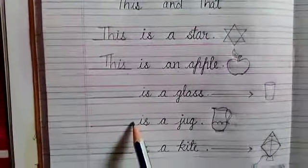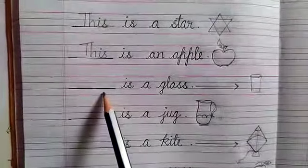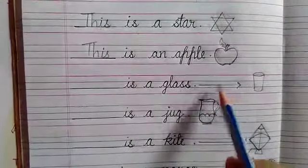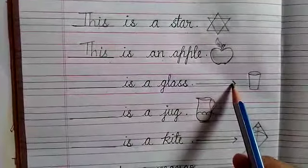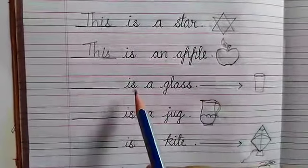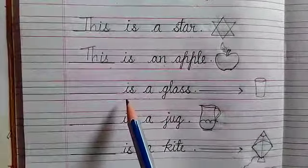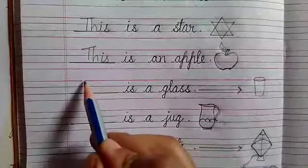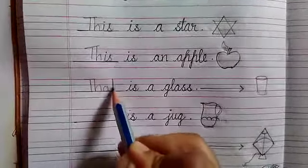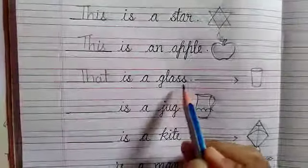In the same way, question number 3. Blank is a glass. As I have put arrow, it means the glass is far. So for the far object, we have to write that. So in the blank we will write that. That is a glass.